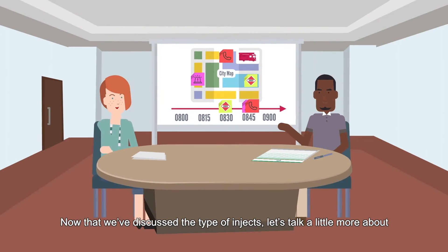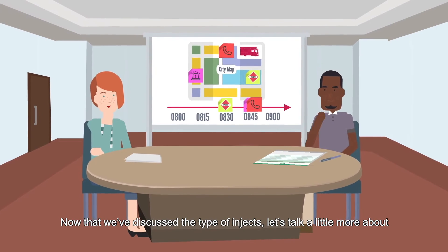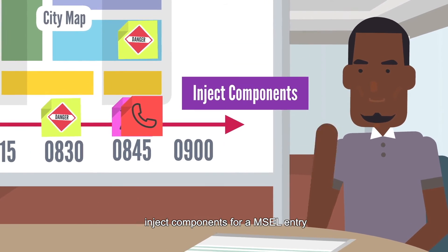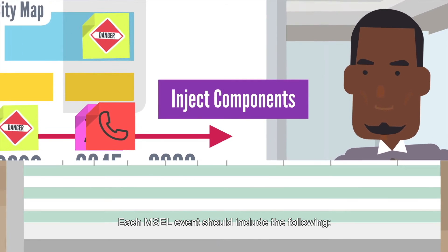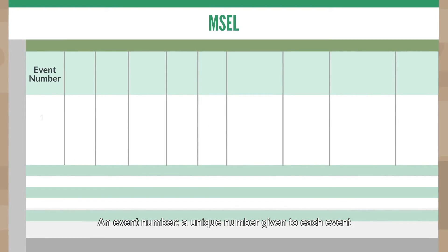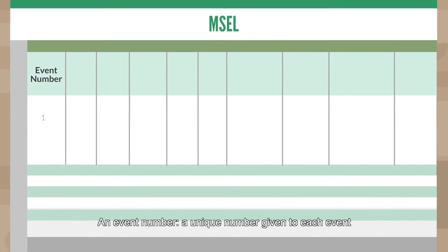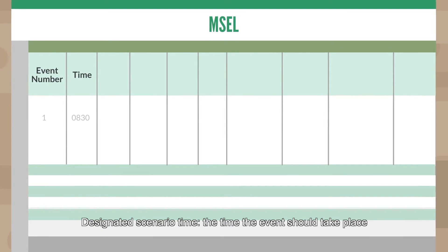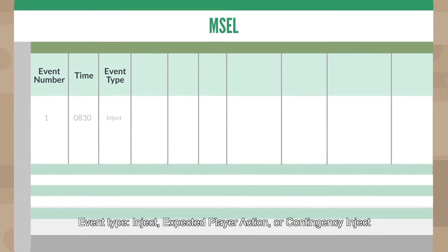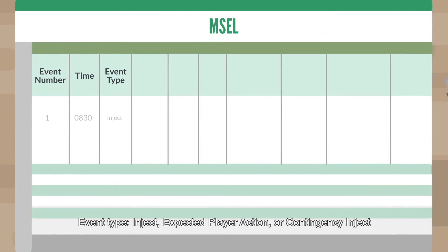Now that we've discussed the types of injects, let's talk about inject components for a MEASL entry. Each MEASL event should include the following: an event number, a unique number given to each event; designated scenario time, the time the event should take place; event type — inject, expected player action, or contingency inject.